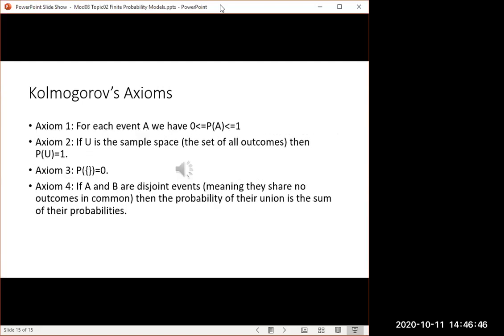In order to be self-consistent or valid, a probability model, that is a function P, needs to satisfy the following four requirements. If A is any event, any set of outcomes, then the probability of that event has to be a number between zero and one. You can't have less than zero percent probability or more than a hundred percent probability.